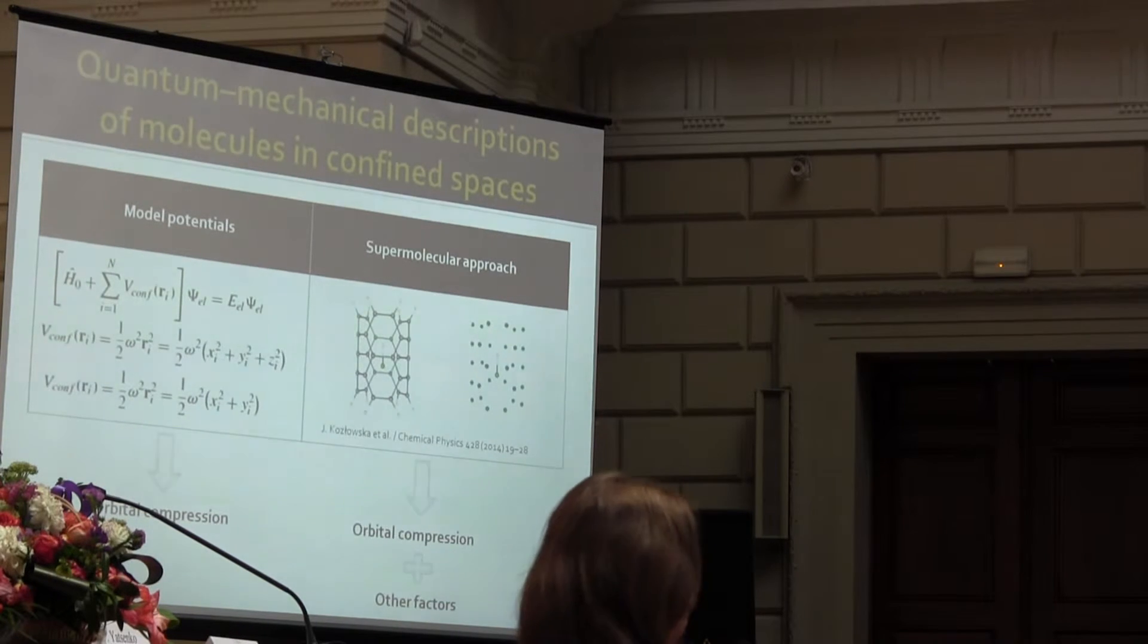But of course, we might also want to include dispersion, and in order to do that we can use supermolecular approximation, which basically means that we put our molecular system in some kind of atomic cages, for example, in nanotubes.